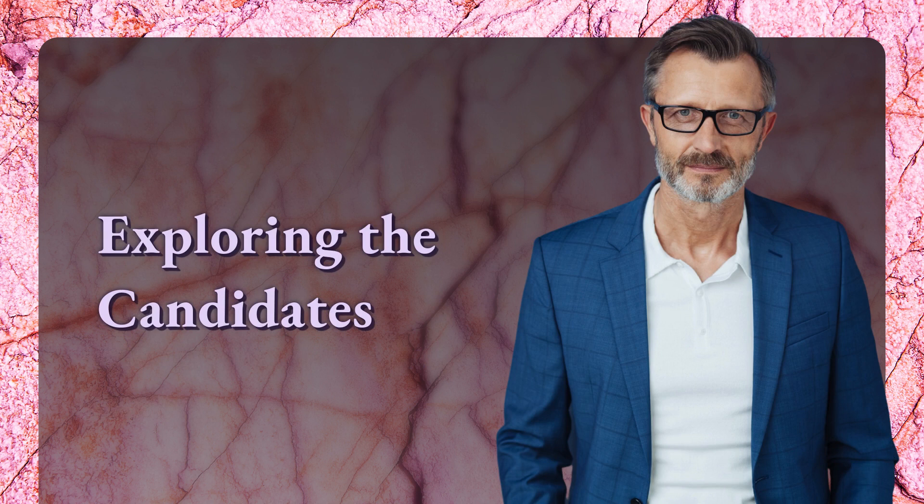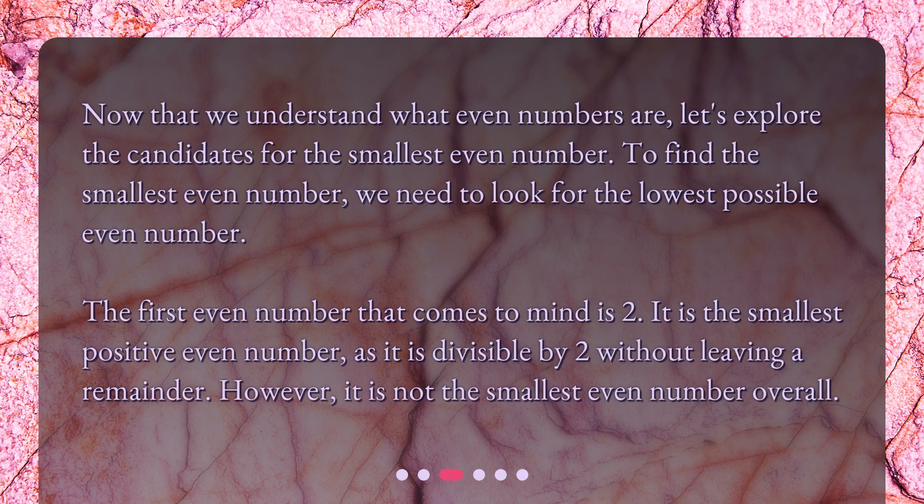Exploring the candidates. Now that we understand what even numbers are, let's explore the candidates for the smallest even number. To find the smallest even number, we need to look for the lowest possible even number. The first even number that comes to mind is 2. It is the smallest positive even number, as it is divisible by 2 without leaving a remainder. However, it is not the smallest even number overall.